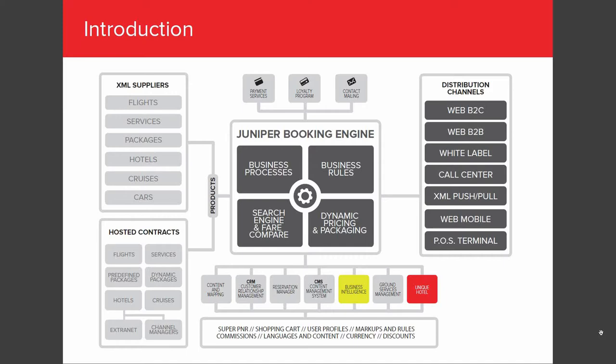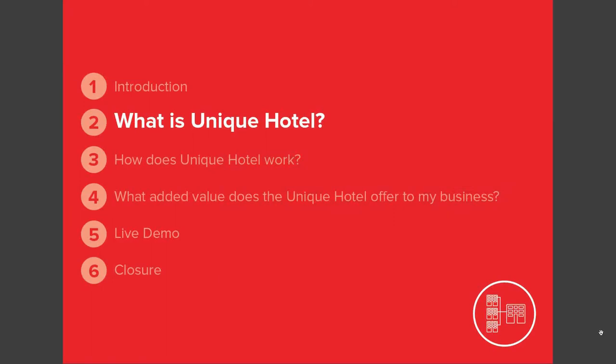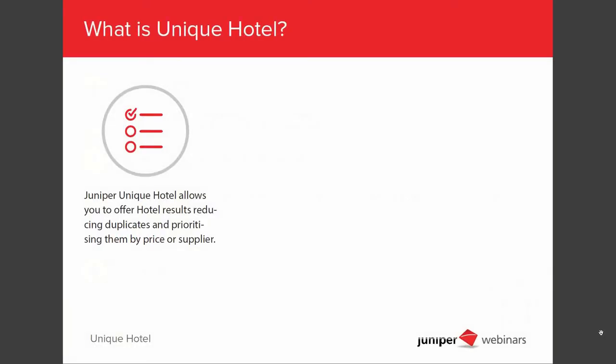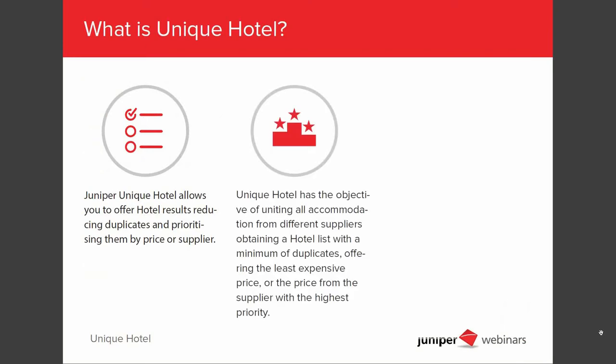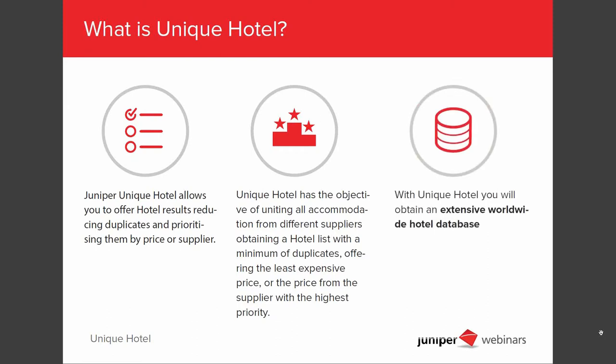To start, the first thing we need to ask is: what is Junihotel? We are going to offer you three main characteristics of this module. Junihotel allows you to offer hotel results without duplicates and prioritize them by price or supplier. Junihotel has the objective of uniting all accommodation from different suppliers, obtaining a hotel list without duplicates, offering the least expensive price or the price from a supplier with the highest priority.